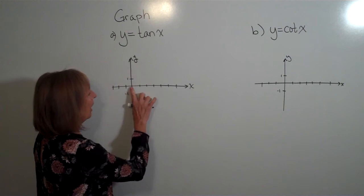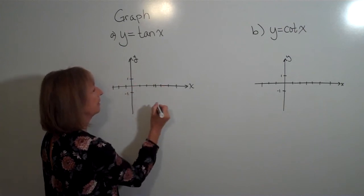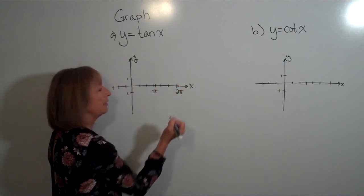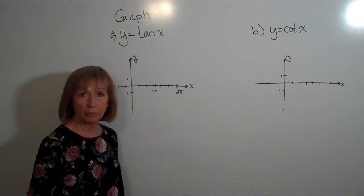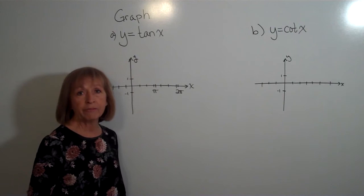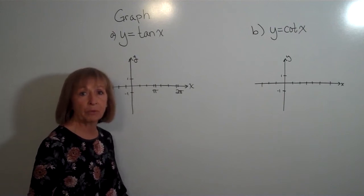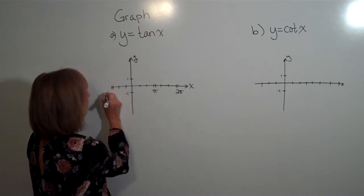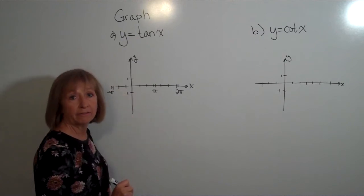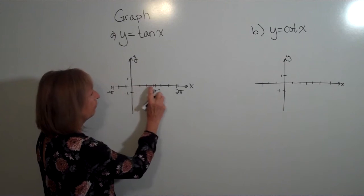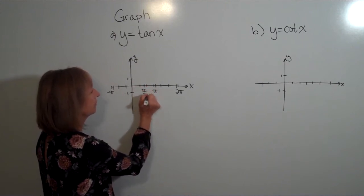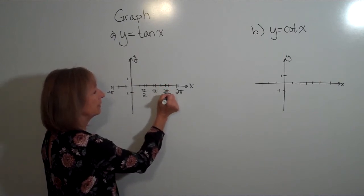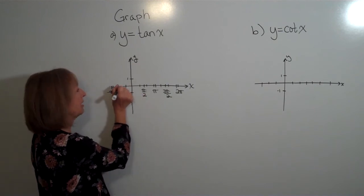Pi falls just a little past 3, and 2 pi is a little past 6 — because pi is approximately 3.14159, and 2 times 3.14159 is 6.28. To the left, I'll have negative pi just a little further left of negative 3. Halfway between 0 and pi is pi over 2, halfway between pi and 2 pi is 3 pi over 2, and halfway between 0 and negative pi is negative pi over 2.